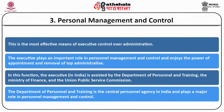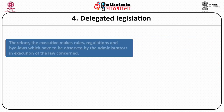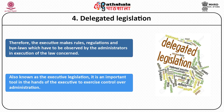Another mode of executive control is through delegated legislation, also known as subordinate legislation. Parliament makes law in skeleton form and the rest — policies, bylaws, rules, and regulations — are supplied by the executive. The executive also exercises control through ordinances. The Constitution of India authorizes the President to promulgate ordinances during the recess of parliament to address situations demanding immediate action. An ordinance is as authoritative and powerful as an act of parliament.